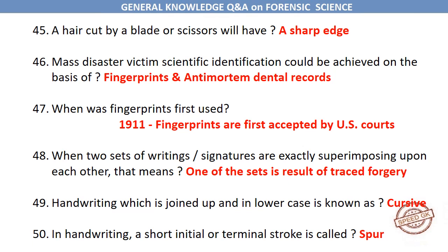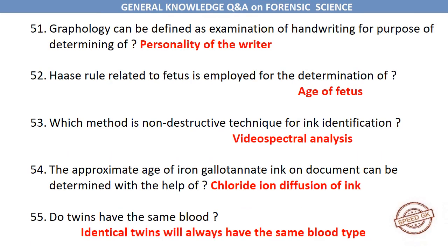Mass disaster victim scientific identification could be achieved on the basis of fingerprints and ante-mortem dental records. When were fingerprints first used? In 1911, fingerprints were first accepted by US courts. When two sets of writings or signatures are exactly superimposing upon each other, that means one of the sets is the result of traced forgery. Handwriting which is joined up and in lowercase is known as cursive.